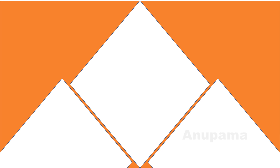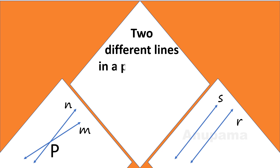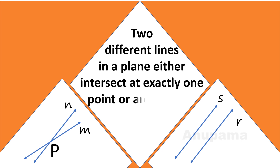Let us understand one more thing about lines. If there is line m and line n, they will either intersect at a point, or — if they are not intersecting — they are parallel to each other. So two different lines in a plane either intersect at exactly one point or are parallel.